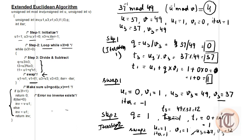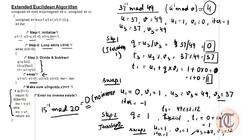This is how we implement the Extended Euclidean Algorithm to calculate the inverse of u mod v. You can try one more problem: 15 inverse mod 20. If you apply this algorithm, the answer will be 0, meaning no inverse exists. Try this problem on your own, and if you have any queries, ask in the comment section. Thank you.